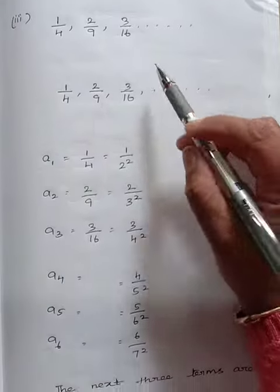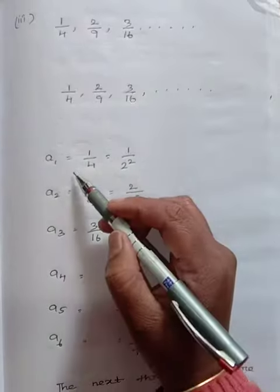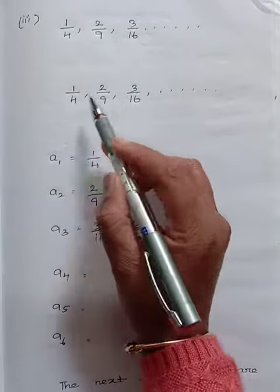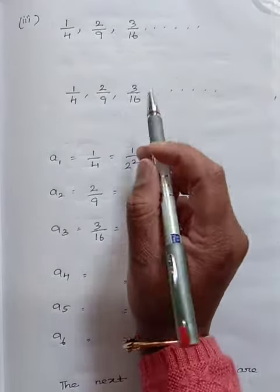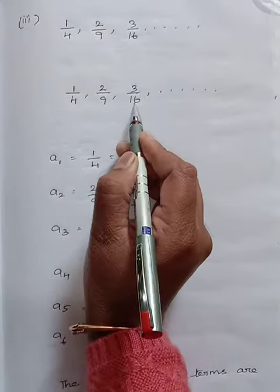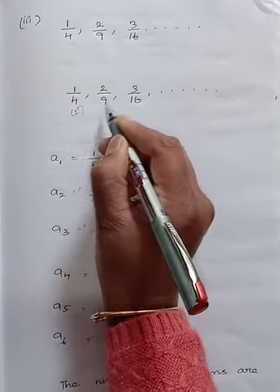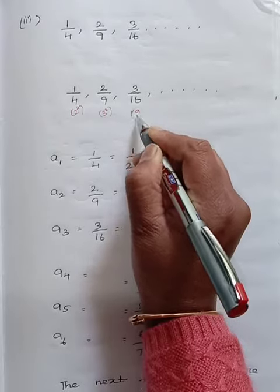Next is your third sum. 1 by 4, 2 by 9, 3 by 16. Now let us see what this is. We are checking the numerator. It is 1, 2, 3, 4, natural numbers we can write as is. 4, 9, 16. Looking at the numbers, we can understand: 4 is nothing but 2 square, 9 is nothing but 3 square, 16 is nothing but 4 square.